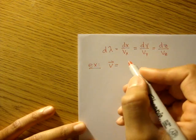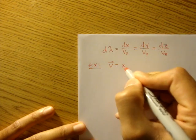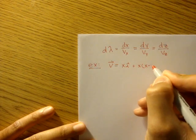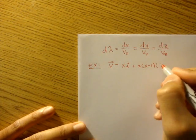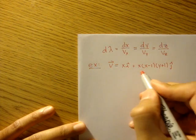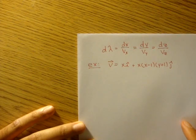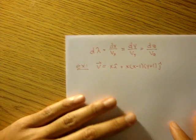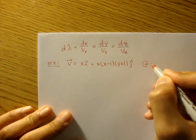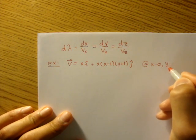And that velocity field is given by xi plus x times x minus 1 times y plus 1 j. So kind of a big y component there, but that's okay. And they're asking, find the streamline equation at x equals 0, y equals 0.